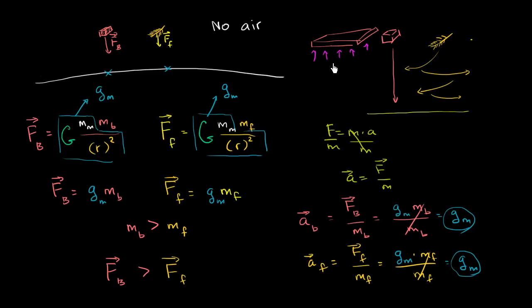Air affects falling in two ways. For objects of the same shape, the heavier one falls faster because it provides more net force against air pressure. For objects of the same weight, the more aerodynamic one — the one with least air resistance — falls faster.